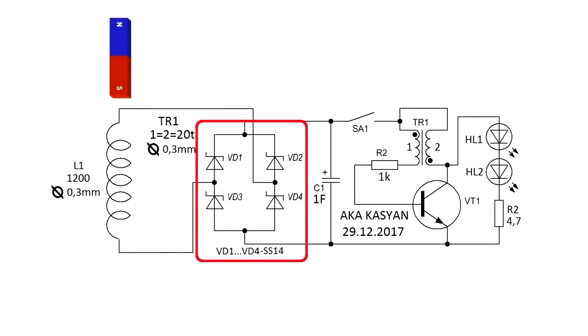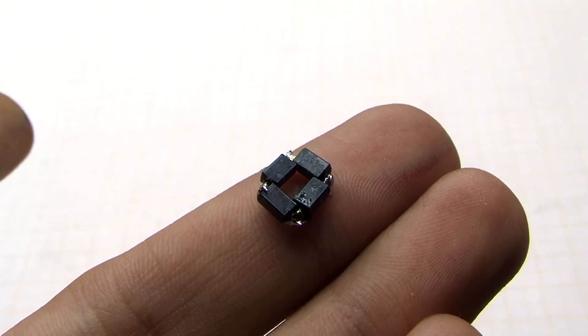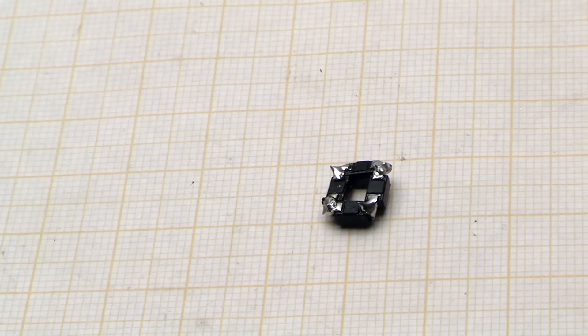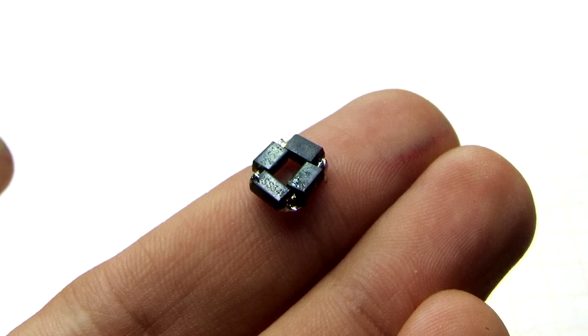The rectifier is collected on Schottky diodes, since they have a very small voltage drop. It isn't advisable to use ordinary diodes, because we will lose more than 1V after the rectifier.